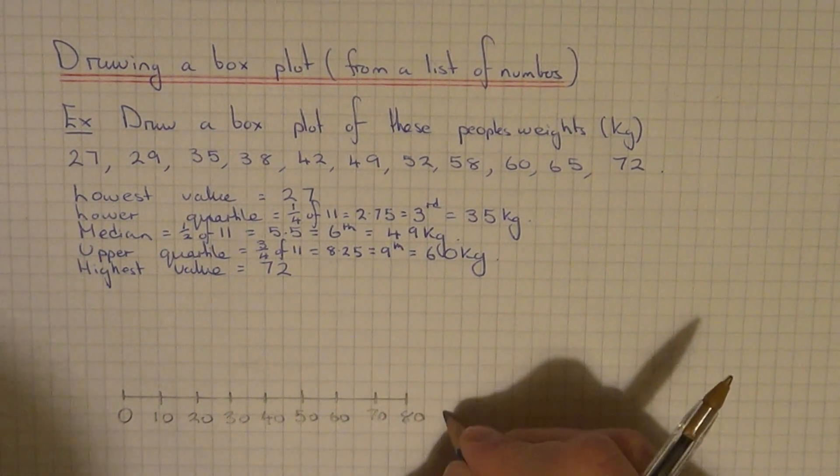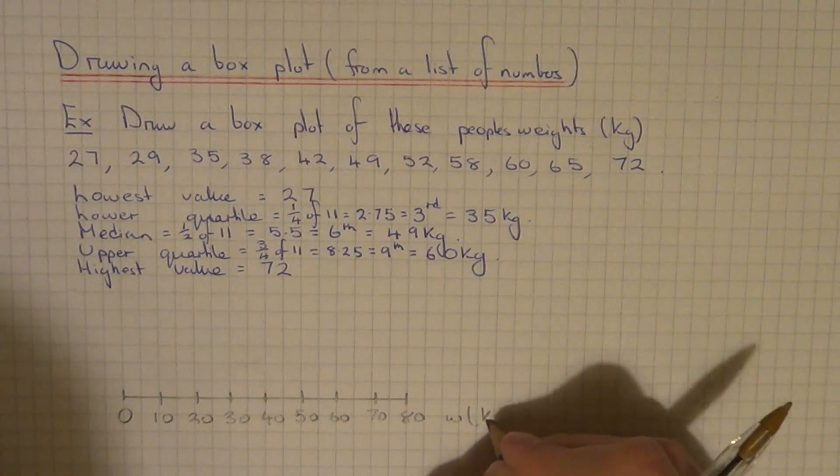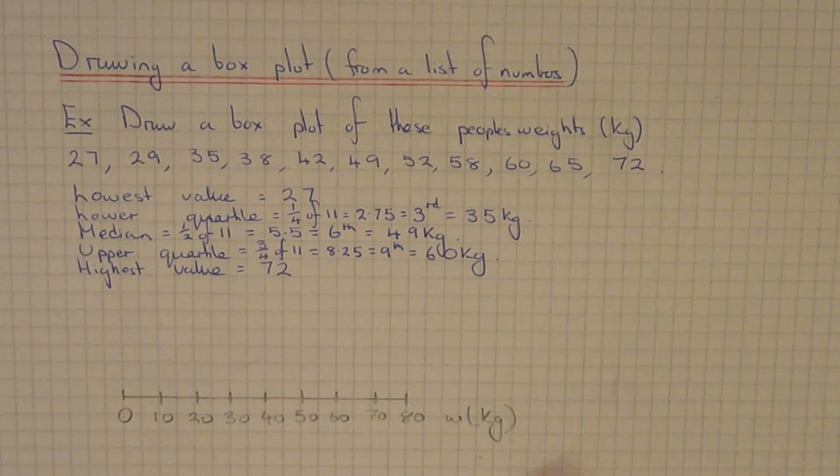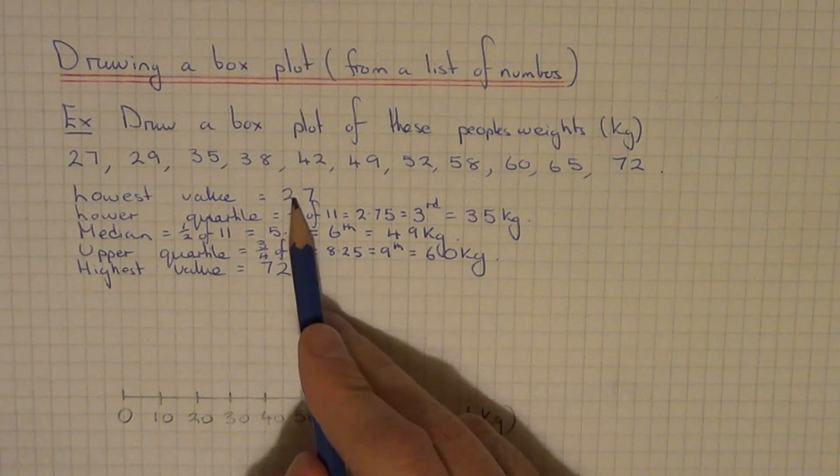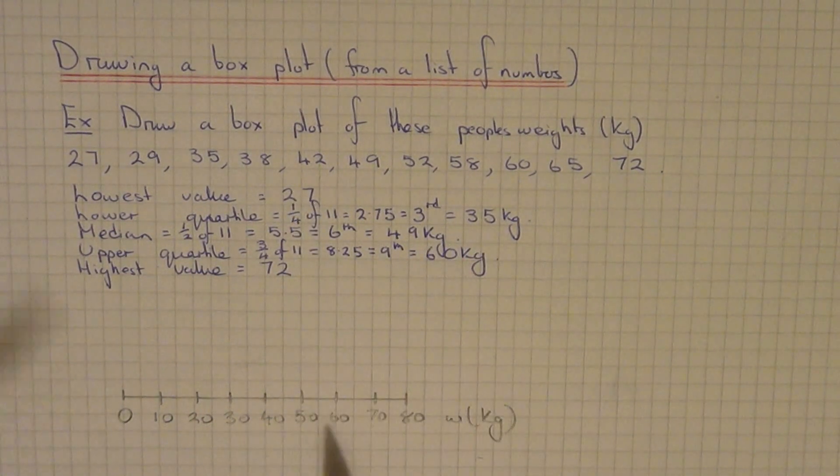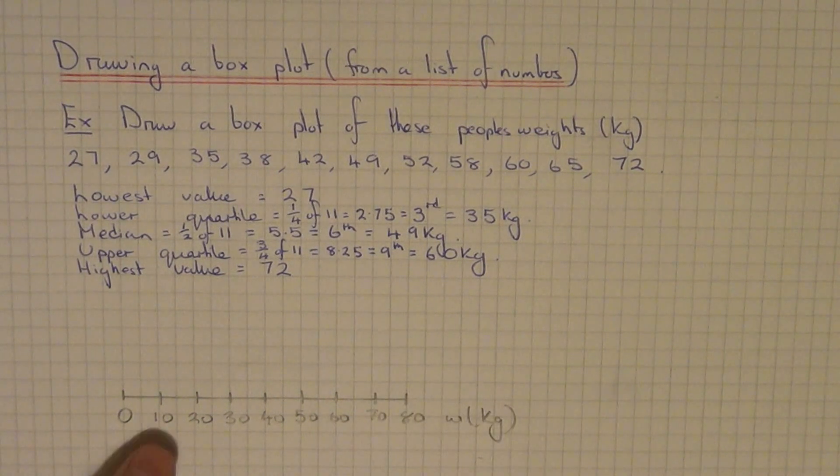The main feature of a box plot is that you only have one axis—a horizontal axis. Next, mark these five points onto the scale. I'm just going to mark them two squares above.